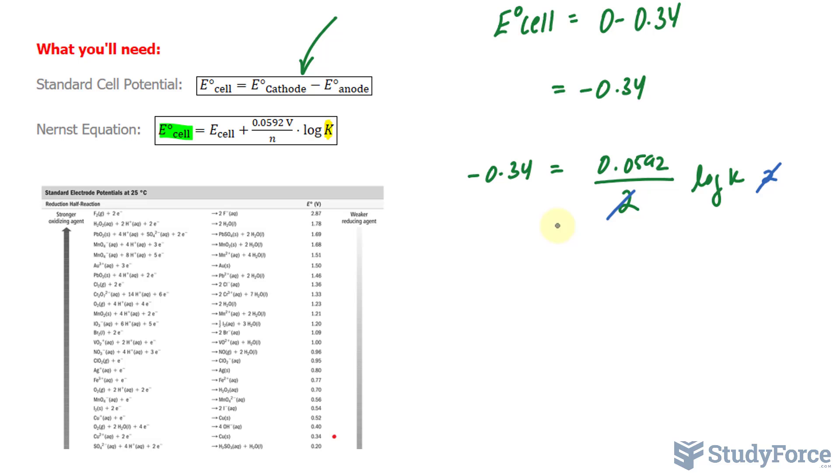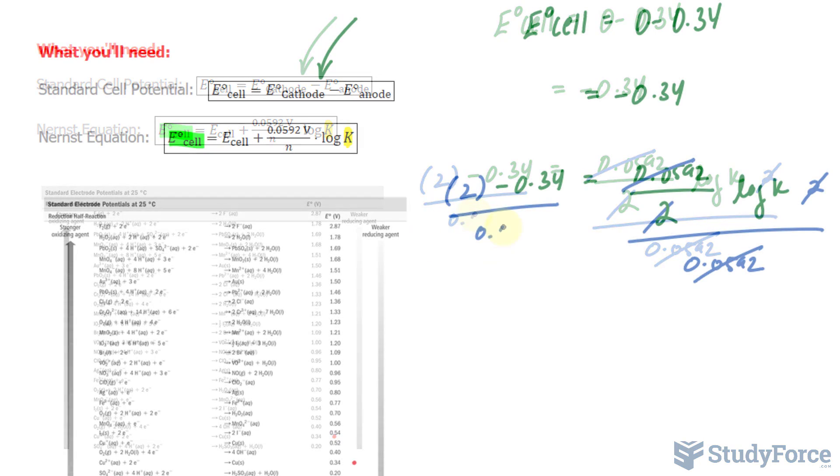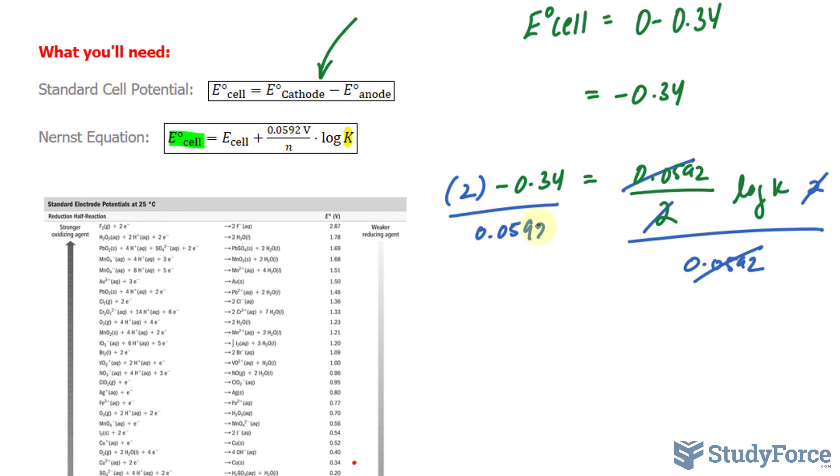I'll multiply both sides by 2, that cancels out this 2. Then I'll divide both sides by this number at the top, so if I divide both sides by that, it will cancel out with this.